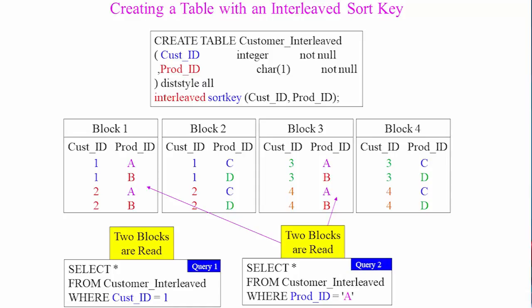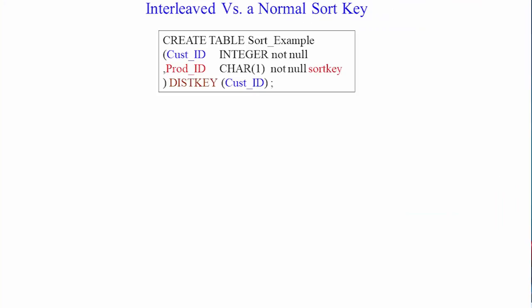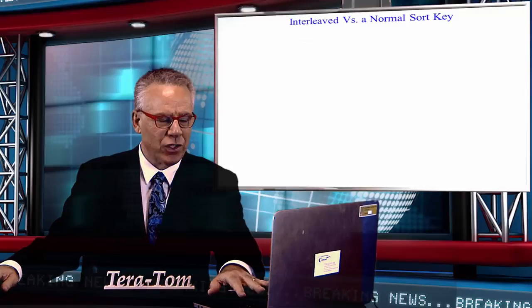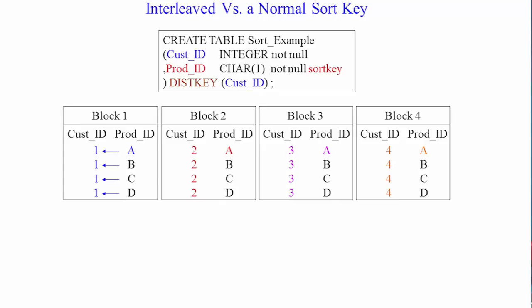Let's take one more last look at this. At the top, we have a normal sort key of the product ID. So, each block has got different customer numbers or cust IDs, and then each of those blocks sort by A, B, C, D.